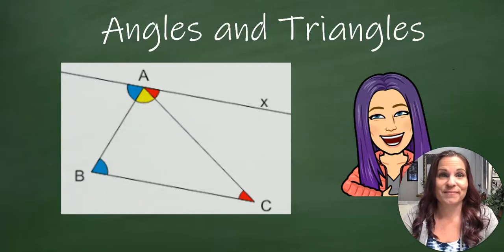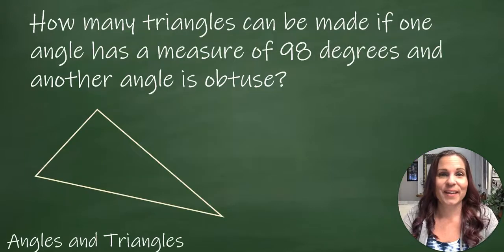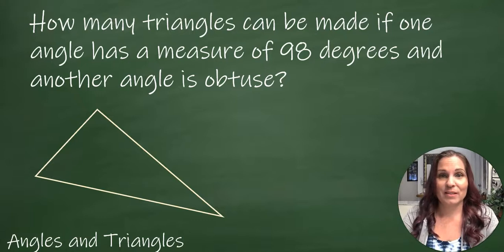Angles and triangles. How many triangles can be made if one angle has a measure of 98 degrees and another angle is obtuse?